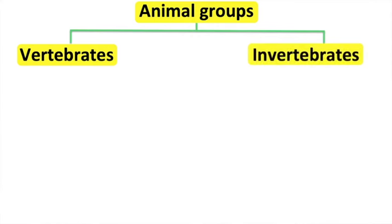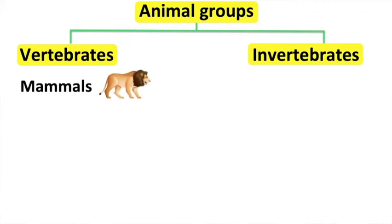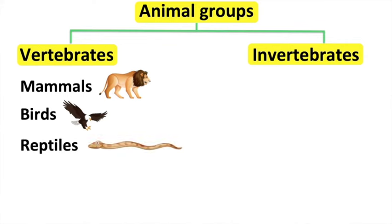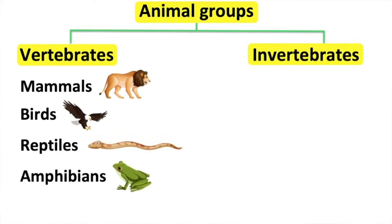Animals can either be vertebrates or invertebrates. Invertebrates are animals that don't have a backbone. There are five groups of vertebrates: mammals, birds, reptiles, amphibians, and fish.